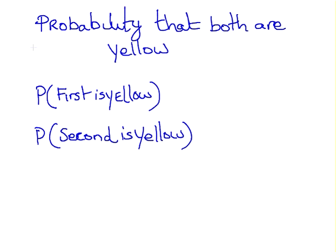Let's look at the first question: probability that both balls are yellow. Well, this is two independent events. The first event is that the first ball is yellow, and the probability of that is four out of seven. Very simple.